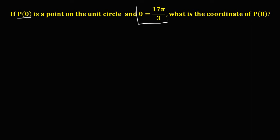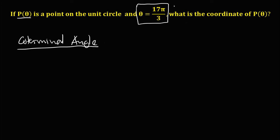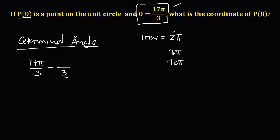To find the coordinate of this given angle, we first need to find the coterminal angle of 17π/3. We need to subtract a number with the same denominator. Since one revolution is equal to 2π, we compute multiples: 3 × 2π = 6π, 6π × 2 = 12π, and 12π × 2 = 24π. Since 12π is closest to 17π, the numerator we use is 12π.